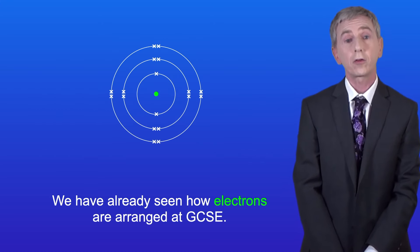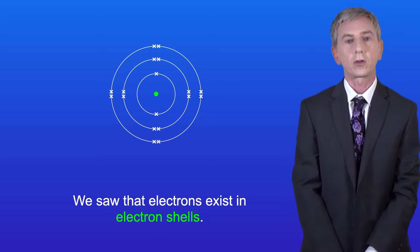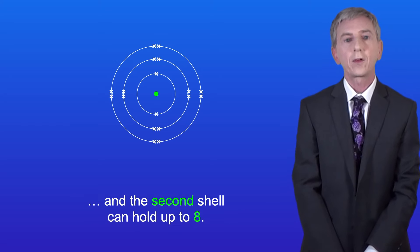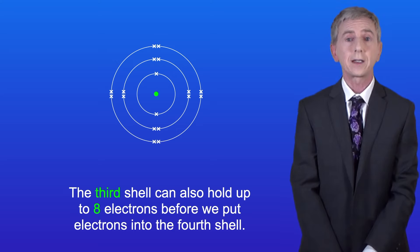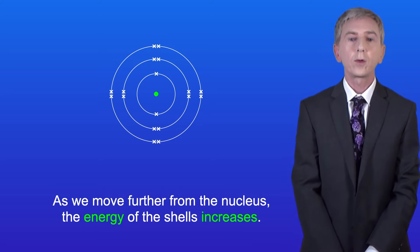Now we've already seen how electrons are arranged at GCSE. We saw that electrons exist in electron shells. The first shell can hold up to two electrons, and the second shell can hold up to eight. The third shell can also hold up to eight electrons before we put electrons into the fourth shell, and as we move further from the nucleus the energy of the shells increases.